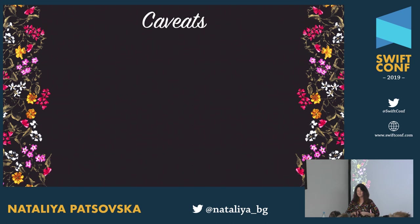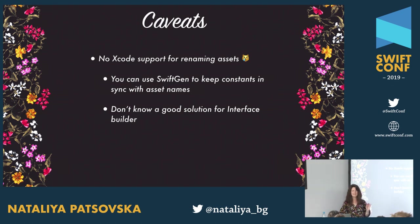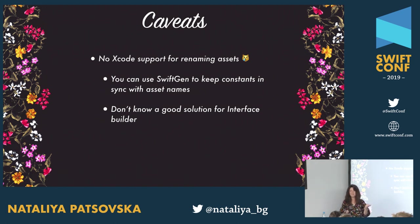Moving to caveats — nothing comes without caveats. There is no Xcode support for renaming assets. If you're using color constants from the asset catalog via UIColorNamed, I suggest using code generation so that when you rename something in the asset catalog, the string in your code stays in sync. For Interface Builder, I don't have a solution — if you rename a semantic color, Interface Builder just says 'missing color' and it doesn't even crash.